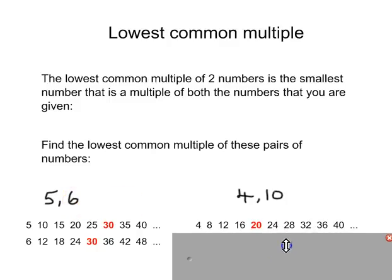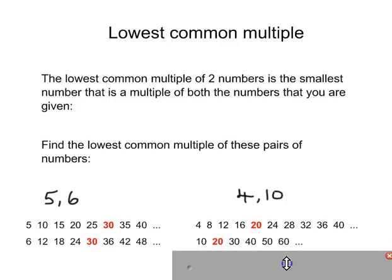If I look at the second one, there's the 4 times table, underneath it I've listed the 10 times table. So 20 is in both the 4 times table and the 10 times table. It's the lowest common multiple of 4 and 10.